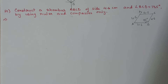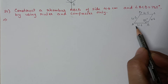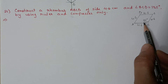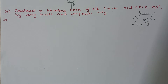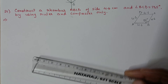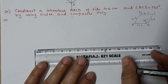Question 21: construct a rhombus ABCD of side 4.6 centimeter and angle BCD is 135 degrees, using ruler and compass only. First draw a rough figure — each side is 4.6 centimeter and this angle is 135 degrees. Draw baseline AB equal to 4.6 centimeter.